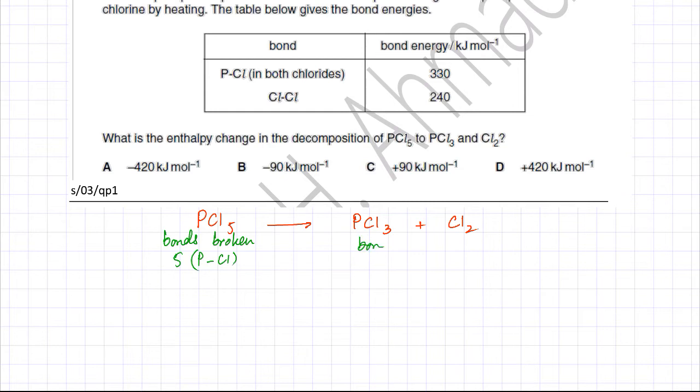Which bonds are formed? Let's note down the bonds that are formed. The bonds formed are three PCl bonds plus one ClCl bond also being formed.